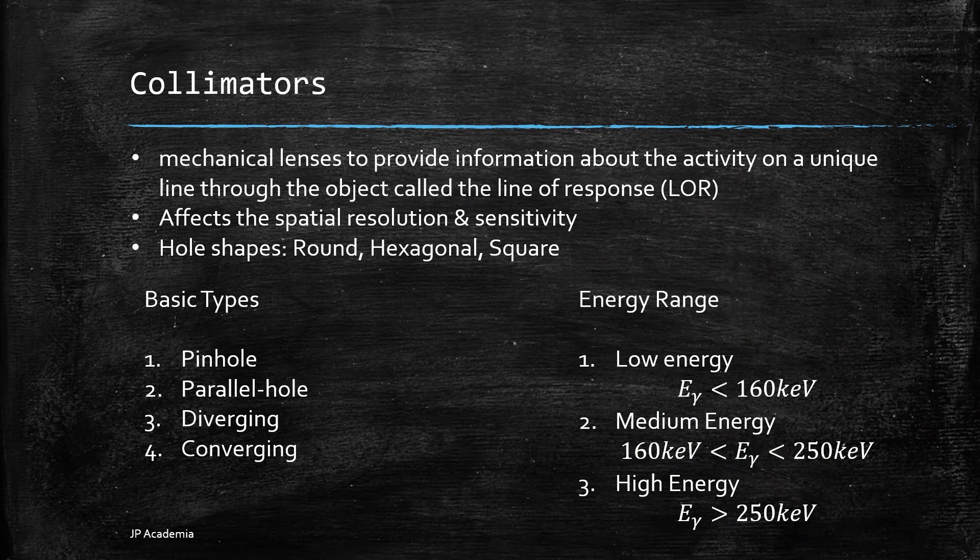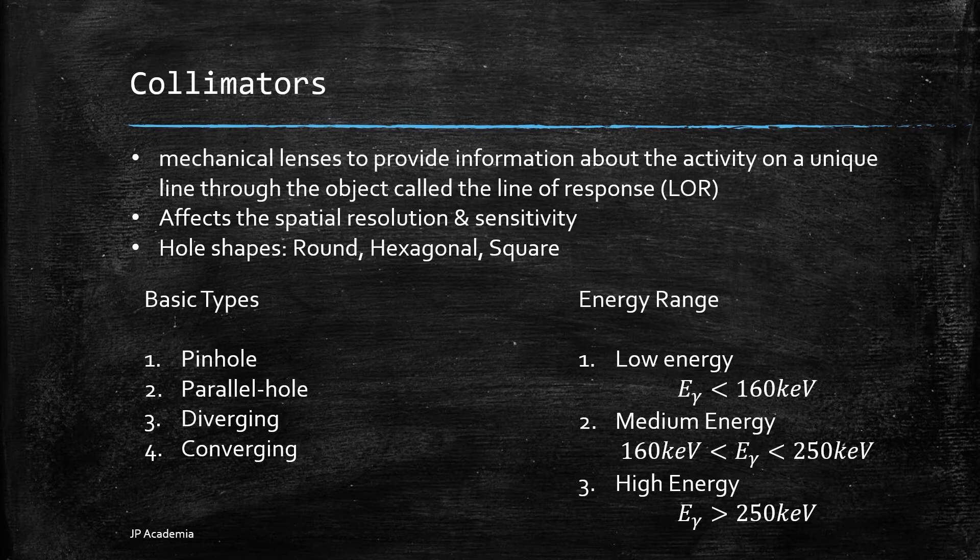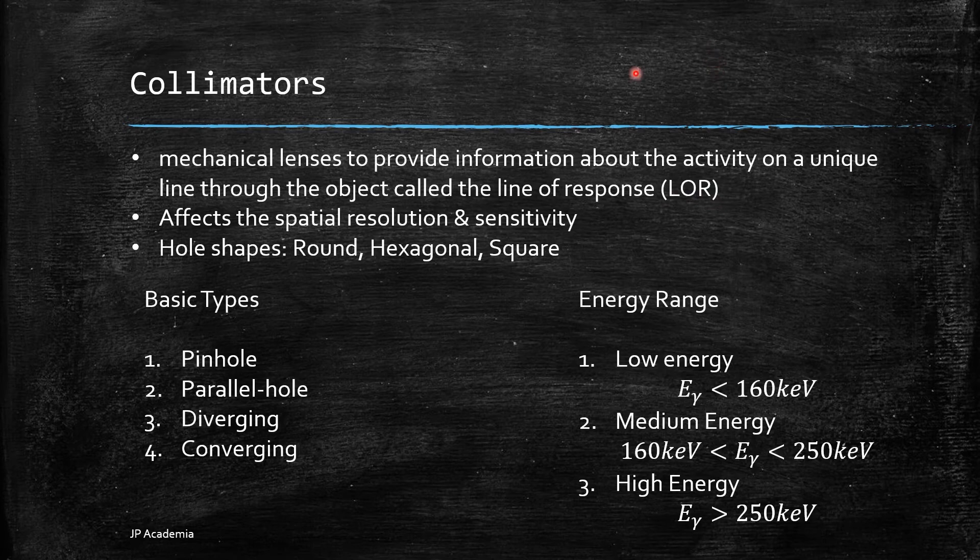Collimators are used as mechanical lenses to provide information about the activity on a unique line through the object called the line of response or LOR. The collimator prevents photons emitted along directions that do not lie along the line of response from reaching the detector. We usually use hexagonal holes in continuous crystals camera. The basic types of collimators according to the hole geometry are the following.